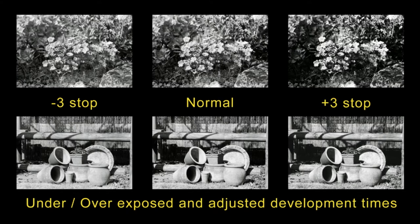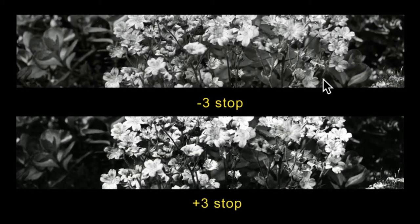I made three exposures of each scene - underexposed, overexposed, and exposed normally - looking left to right. The annotation 'minus three stops' reflects the compensated development time, so the left-hand images were overexposed in camera by three stops and then development was reduced. Extended development will always increase contrast, and you can compare that in the contrast shown on the right-hand side. Let's take a slice here at the extremes.